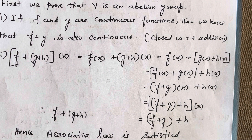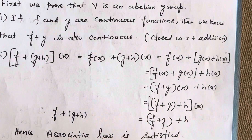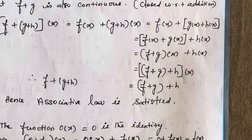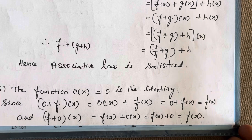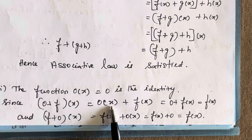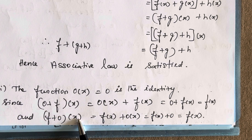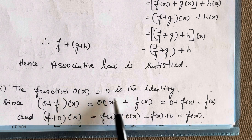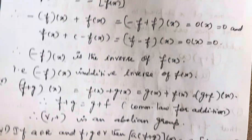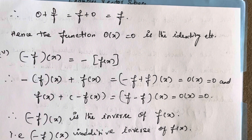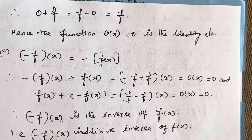Using the property that (f+g)(x) = f(x)+g(x), we prove associativity. For identity, the zero function 0(x) = 0 serves as the identity, because (0+f)(x) = 0(x)+f(x) = 0+f(x) = f(x). Similarly, (f+0)(x) = f(x)+0(x) = f(x)+0 = f(x). So 0+f = f+0 = f, and hence the function 0(x) = 0 acts as the identity element.